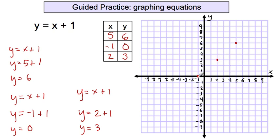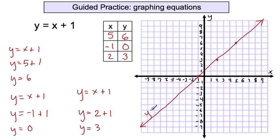Connect the dots, continue the line, and label it. There it is — the y equals x plus 1 line. I have a straight line on the graph. It took a lot of work to get there, but I got it.